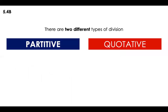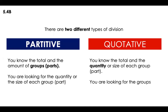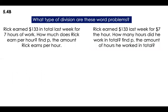Now, with division, there are two different types: partitive and quotative. Partitive — I like to think of it as 'parts, parts, parts' — you know the total and the number of groups or parts, and you're looking for the quantity or size of each group. On the other side, quotative is whenever you know the total and the quantity or size of each group or part, and you're looking for the number of groups or parts.